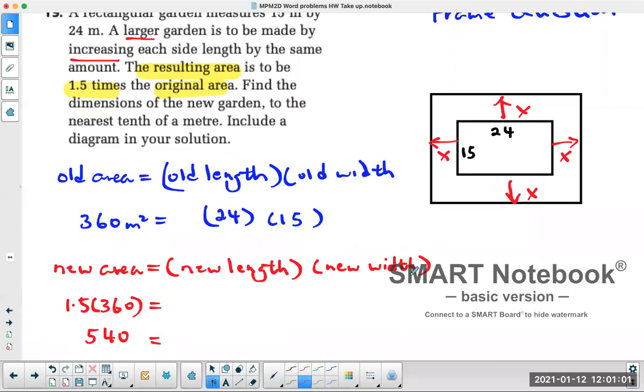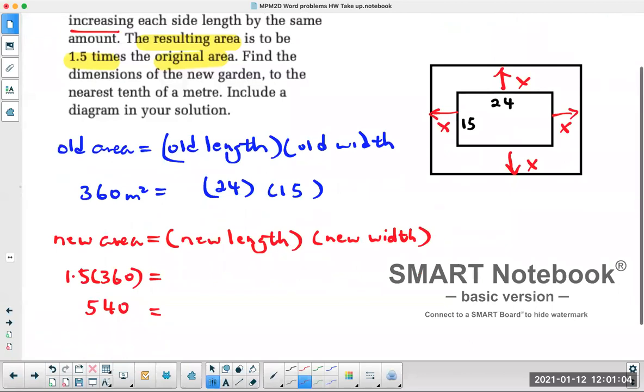What about the new length and the new width? Well, take a look at the diagram. This is the new length. It's equal to 24, which is the old length, and I have to add this little bit and that little bit. This bit is equal to x, and this bit is also equal to x. So the whole thing would be 24 plus 2x. That's the new length.